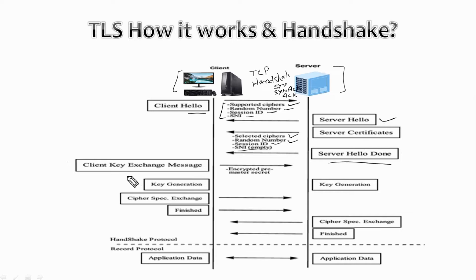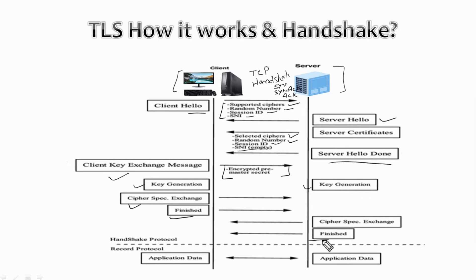Once the Server Hello is done, the client will initiate a key exchange message in which the client will share the encrypted pre-master secret. After all these messages, master key creation will start — both server and client will exchange the specific cipher, and after that finish the handshake to form the handshake protocol, or we can say the encrypted tunnel. Once the master key is created, the actual application layer data transfer will start.